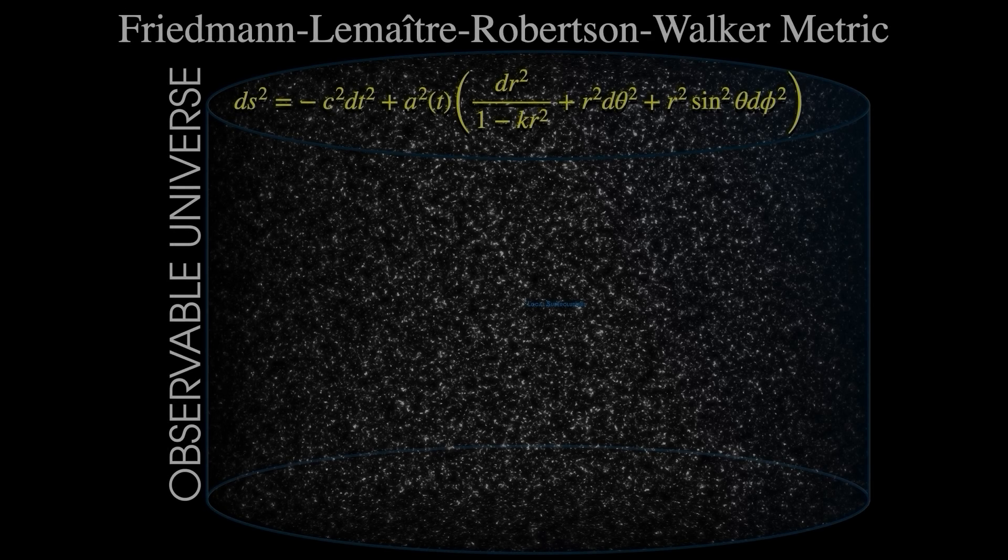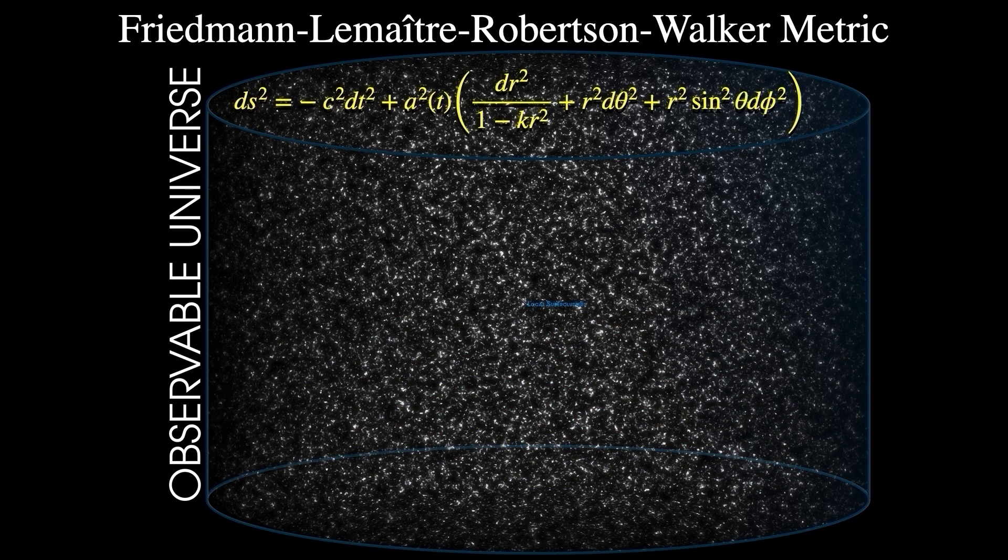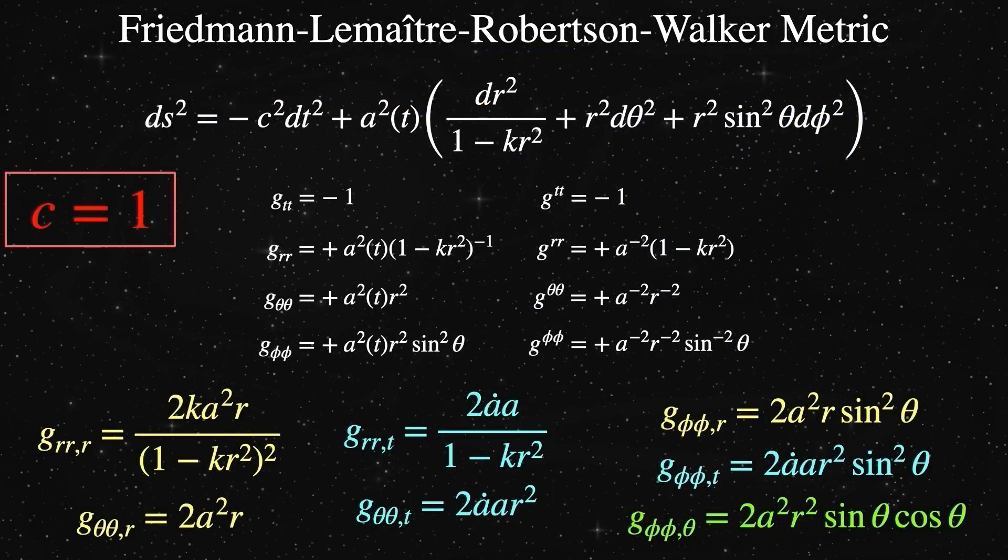But even with all this, it is sufficiently uniform on cosmological size scales to justify using a metric that assumes perfect homogeneity and isotropy. We need to do a much deeper analysis of the FLRW metric in order to understand its connection to gravity.